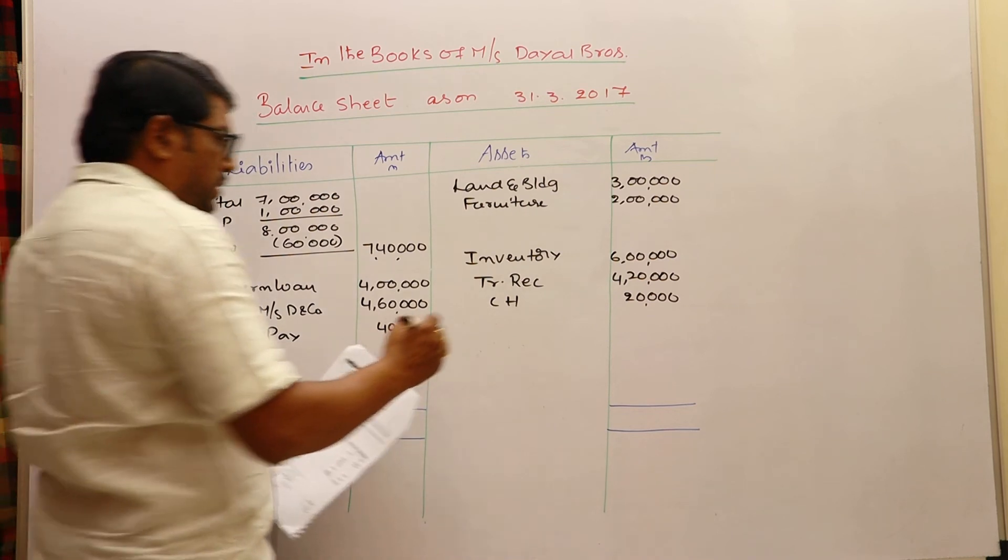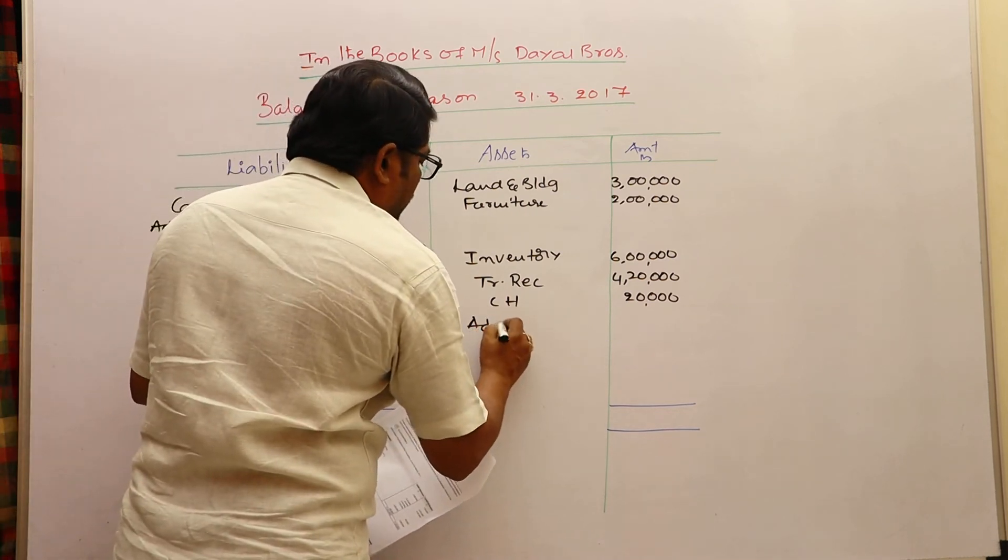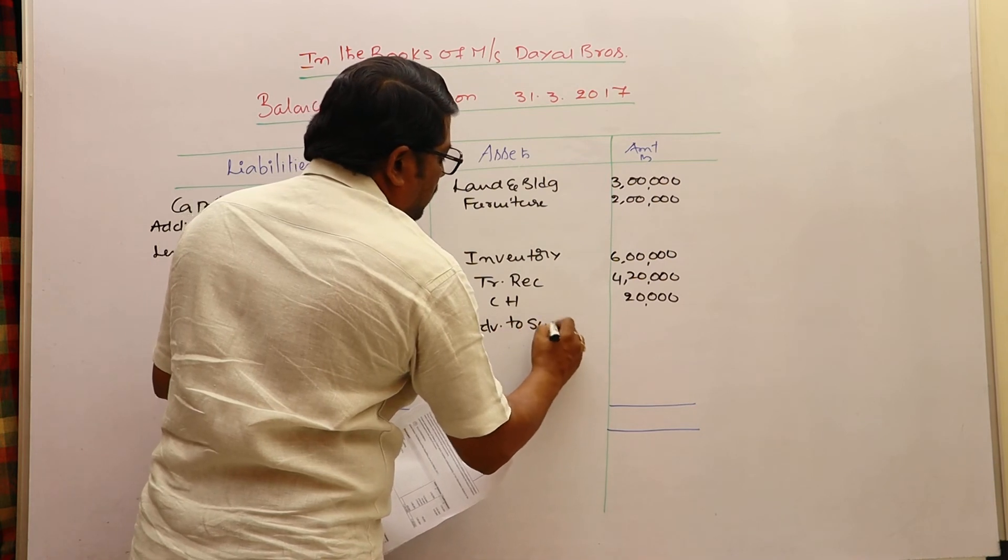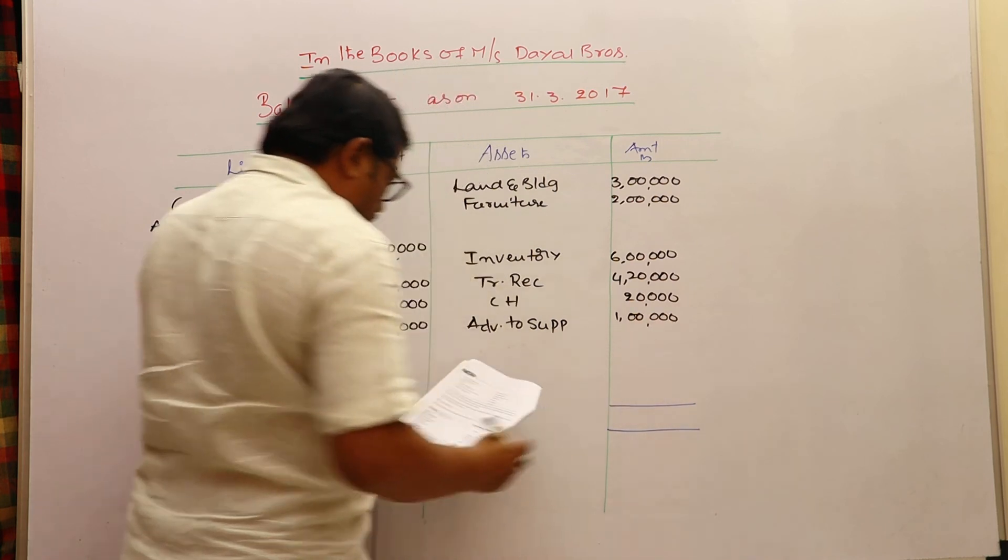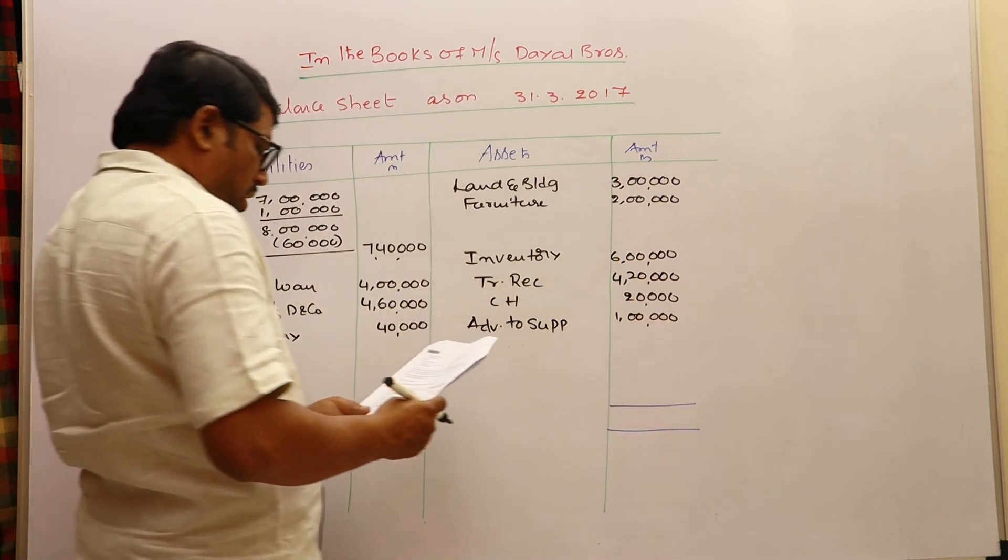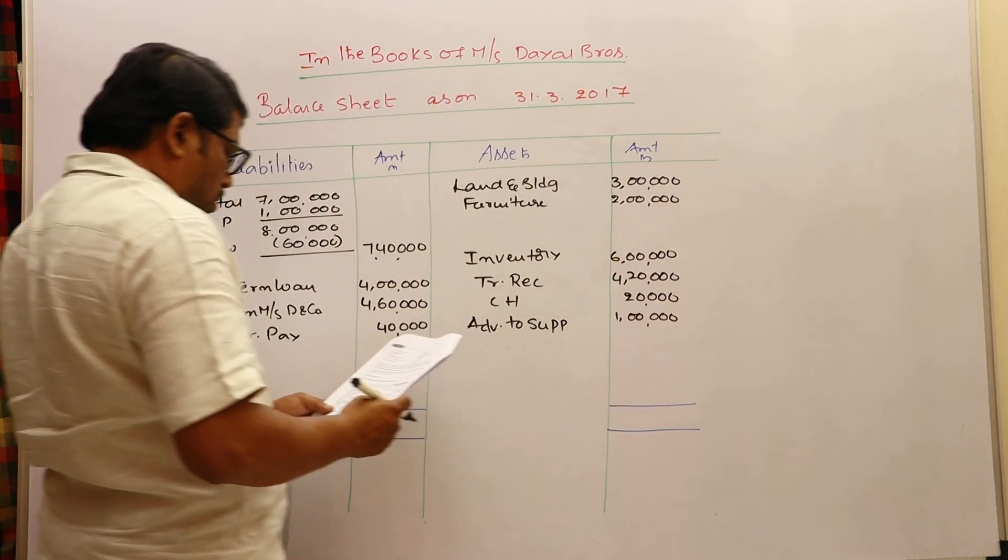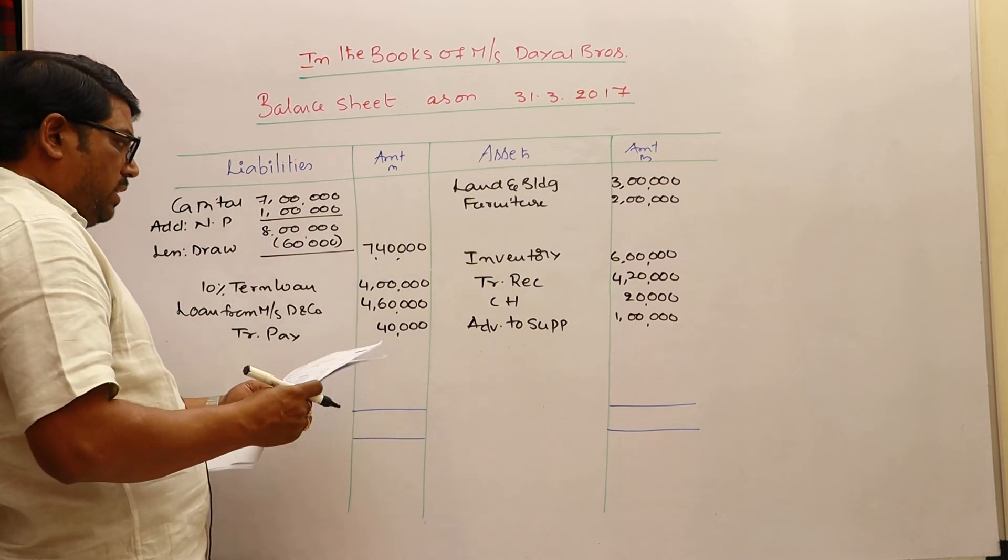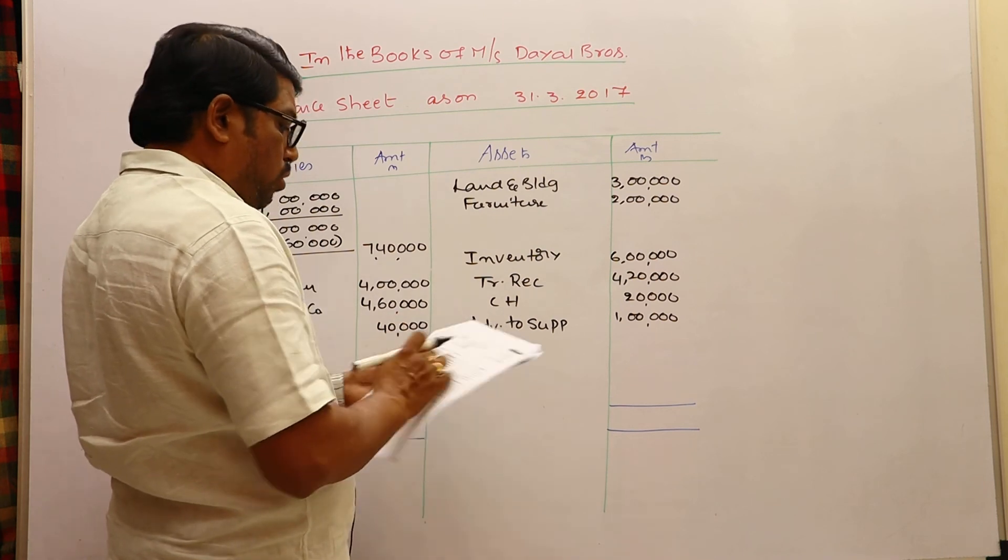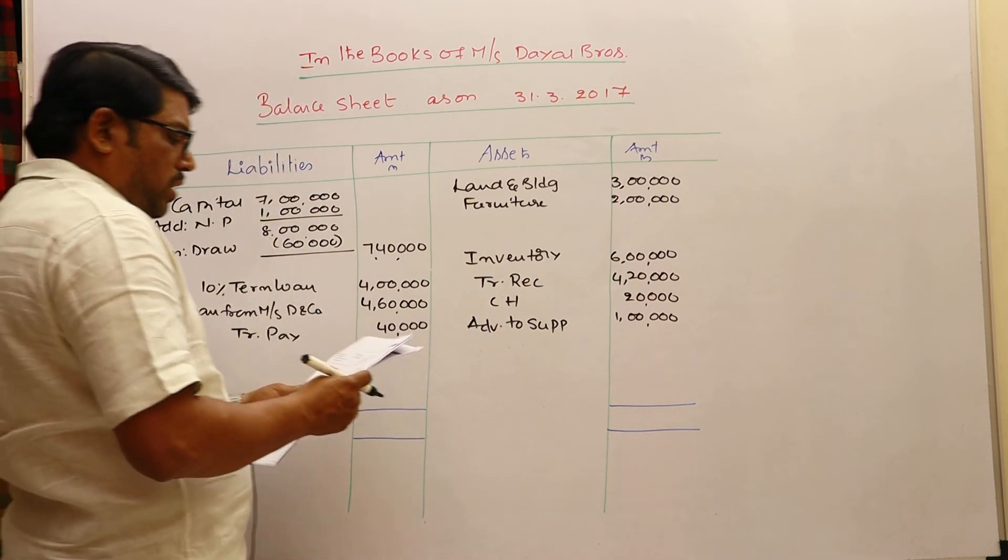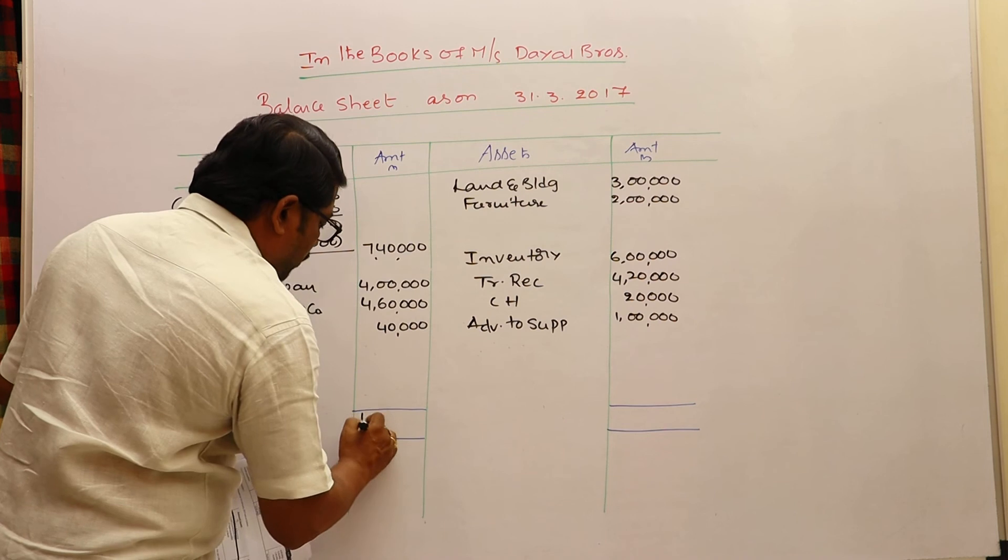Advance to suppliers, asset, one lakh. Advance given to anybody is like an asset, one lakh. Net profit being added, drawings being already deducted, that's all. No more items to write here, just we can go to the balance sheet. Total - let us check what is the balance sheet total here: sixteen lakhs forty thousand.